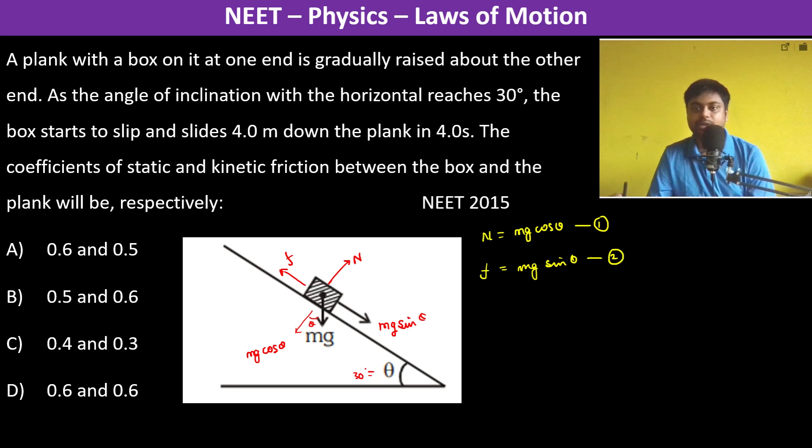Now when it is limiting, that time f is equal to μs times N. So therefore mg sin theta is equal to μs into mg cos theta. So therefore μs becomes tan theta, so tan of 30 degrees.